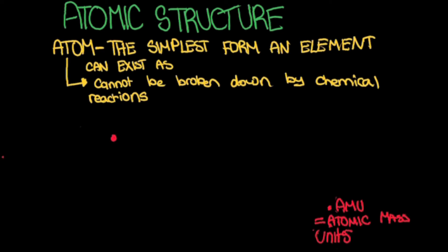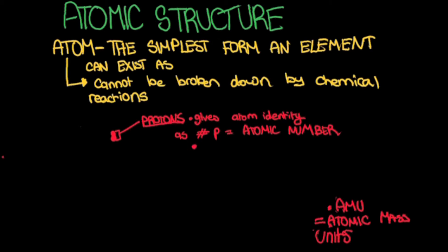Now it's time to talk about the main subatomic particles within an atom. The first and most important subatomic particle is the proton. This is because the number of protons gives the atom its chemical identity. The number of protons within an atom is equal to its atomic number. A proton weighs 1 amu or 1 atomic mass unit. It has a charge of positive 1 and was discovered by a scientist called Goldstein.